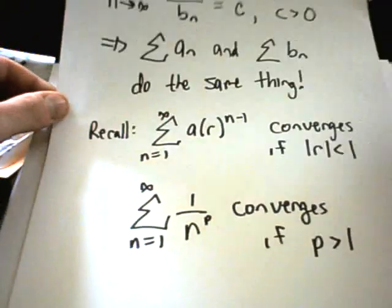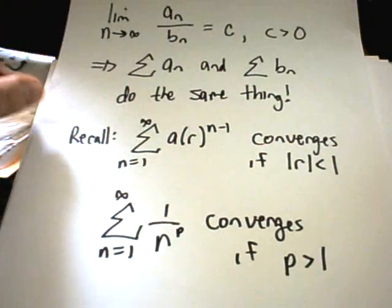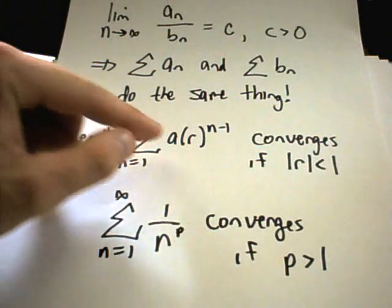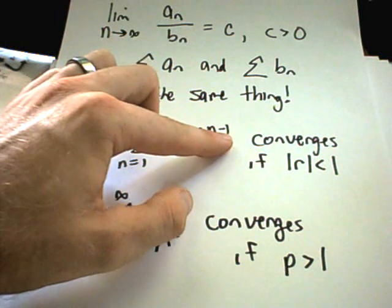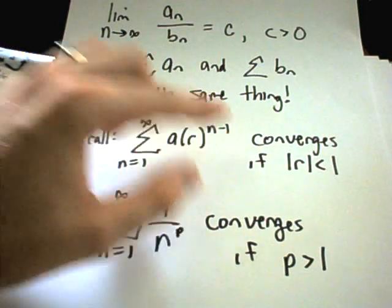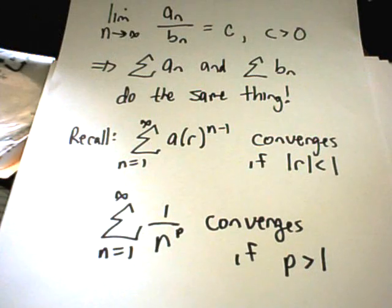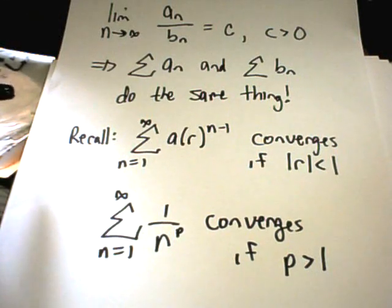A couple useful things to remember, and you'll use them very often with this limit comparison test. Remember if you have a geometric series, a number raised to a variable power, that's going to converge if the absolute value of that power is less than one.